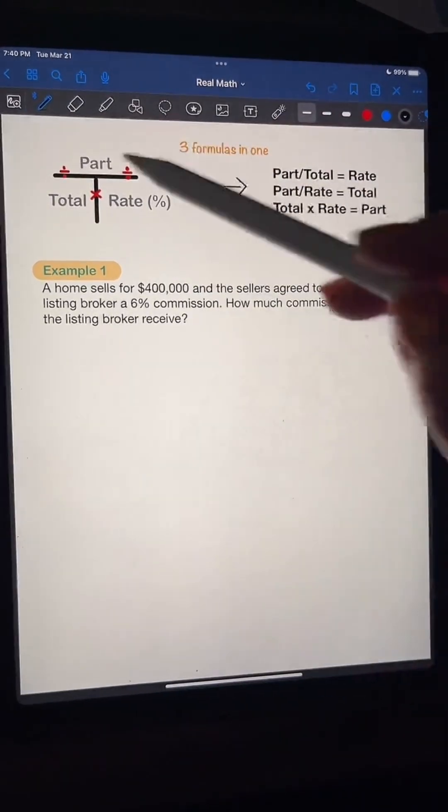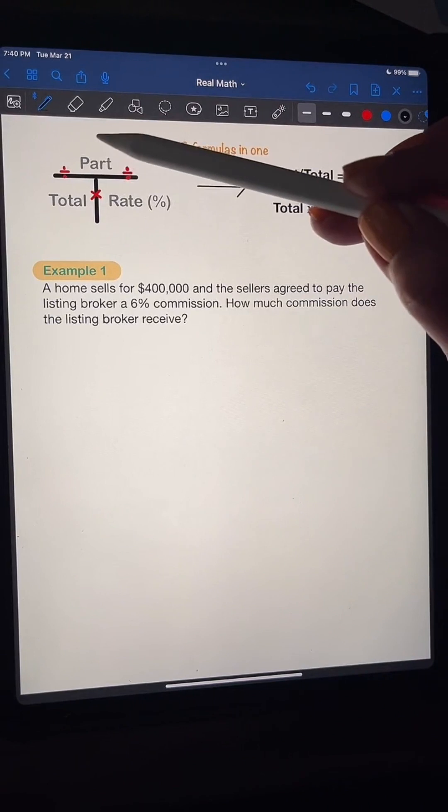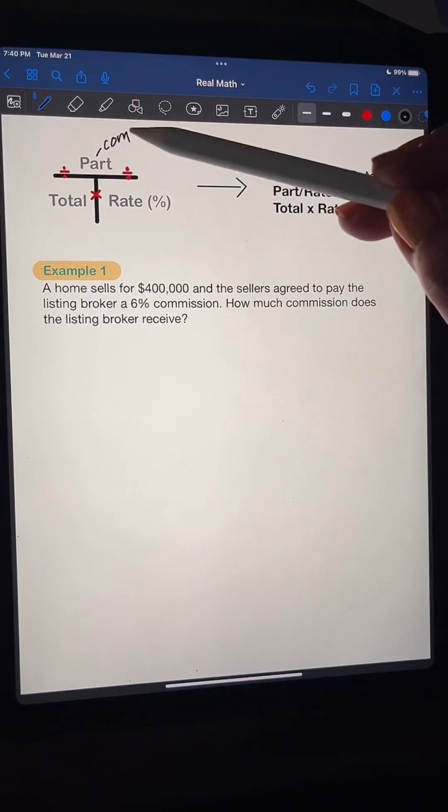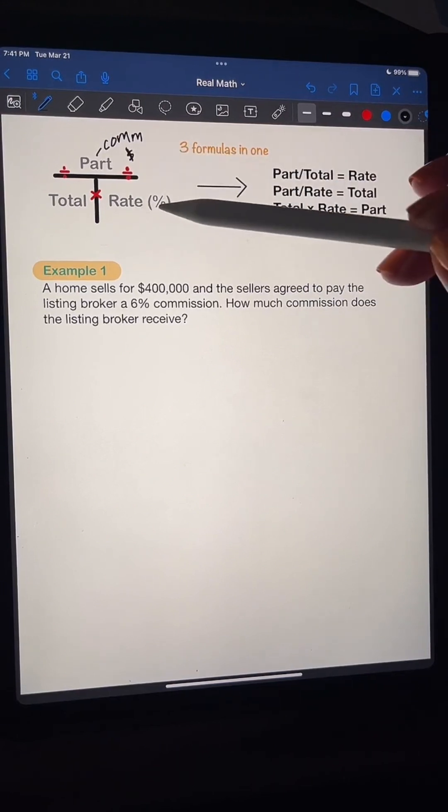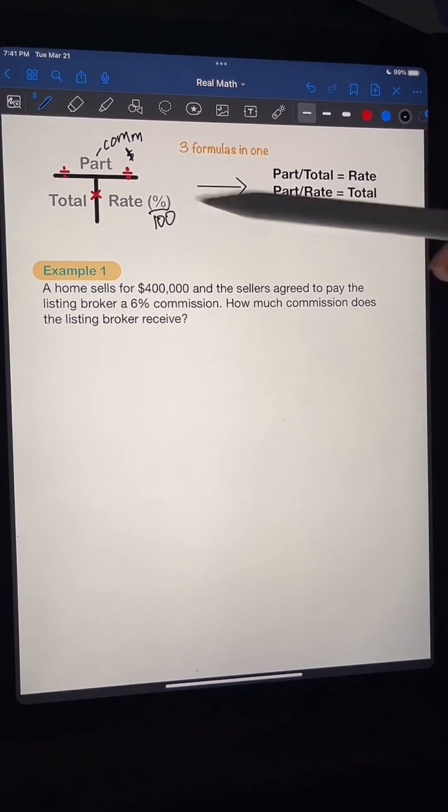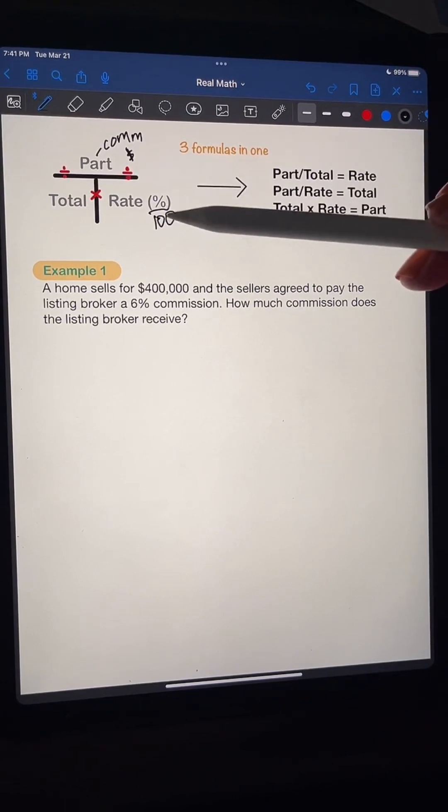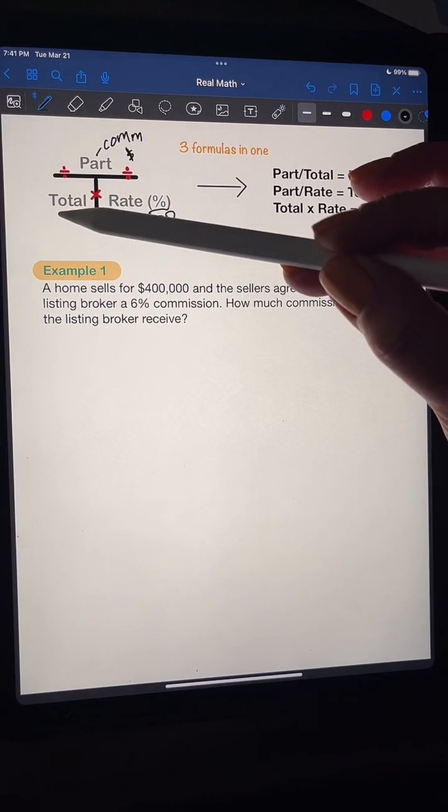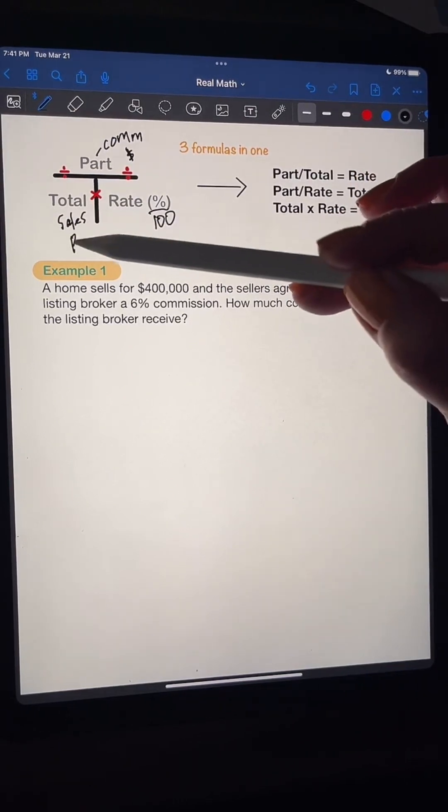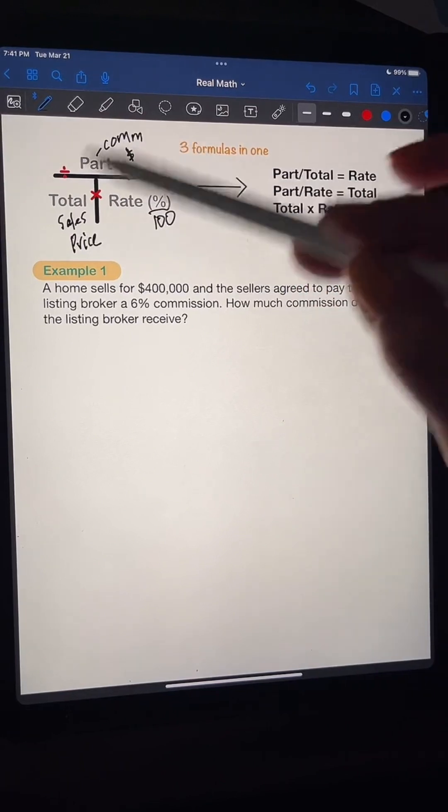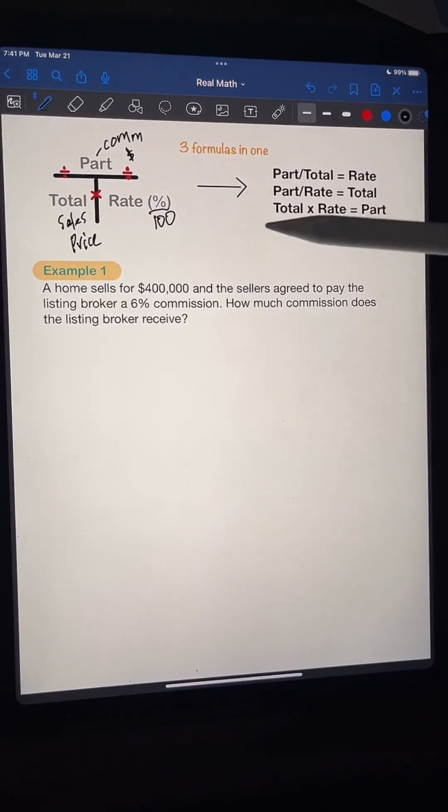So now I want you guys to understand that part means like commission. This is probably like commission, how much money you've made. Rate, this is your percent. But remember to always divide it by 100. You always have to divide this percent by 100. Okay? And total, this is the sales price. Usually. Okay? How much the house sold for. So I just need you guys to understand that. All right?